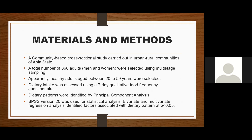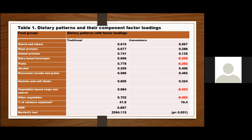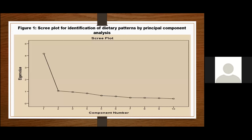For the results: the first table shows the component factor loadings. The KMO value was 0.887 and Bartlett's test had a p-value of 0.001, thereby showing the suitability of the data for factorial analysis. After the factorial analysis, two patterns were identified.